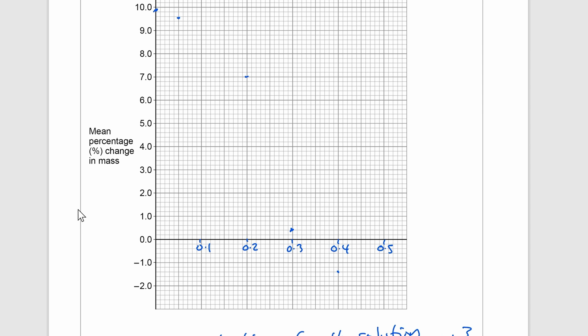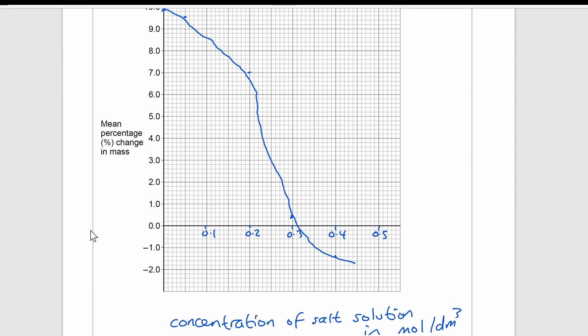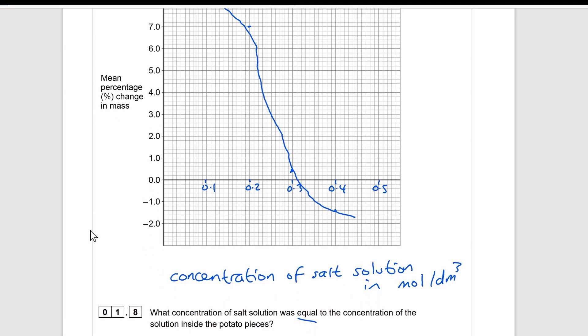After you have plotted your points you're most likely going to be asked to draw a line of best fit. Now a line of best fit can be a curve. Look at your points carefully and then draw a smooth curve through them. You need to make sure you do not connect the dots with straight lines. A smooth curve following the trend of the points will guarantee you your mark for your line of best fit.